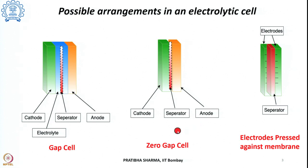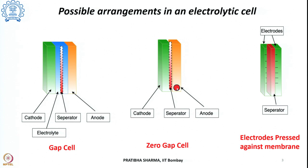The second concept is a zero-gap cell where the separator is pressed across the two electrodes. The electrodes here are porous with electrolyte present in the interpolar region, and the separator has zero gap with respect to the electrodes. In this arrangement the ohmic losses are low compared to the gap cell, allowing high current densities to be achieved at lower voltages. This configuration is used for alkaline water electrolysis.